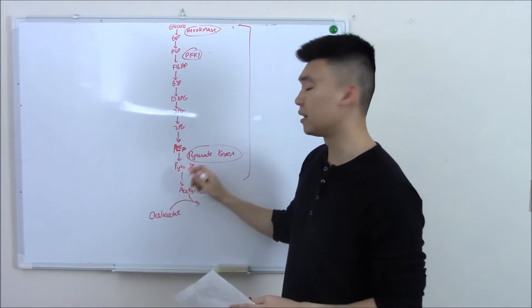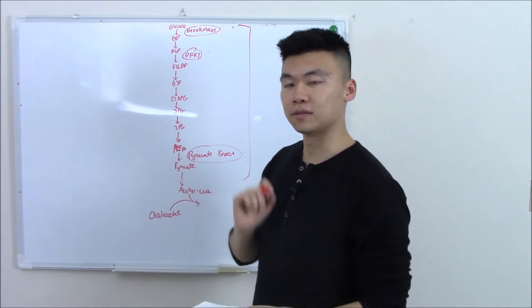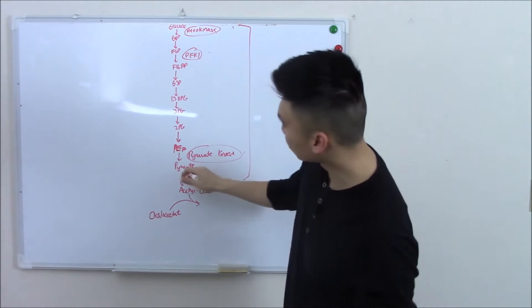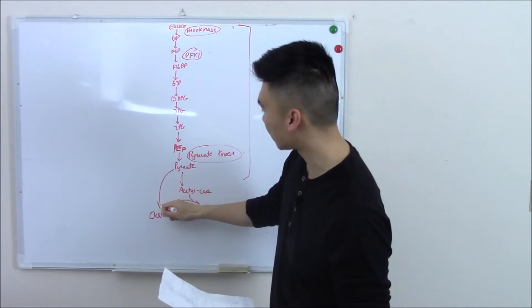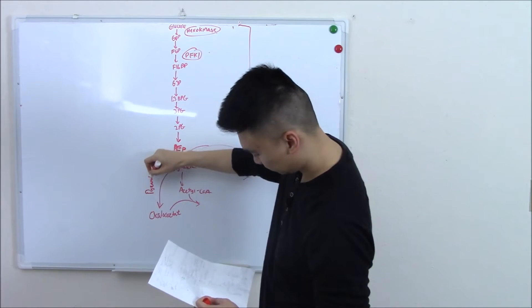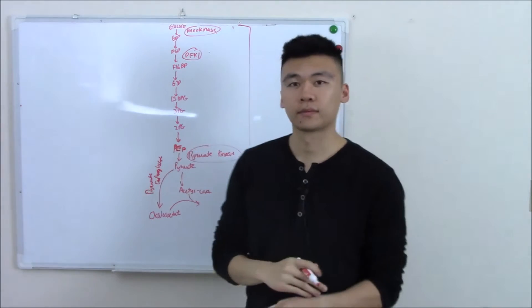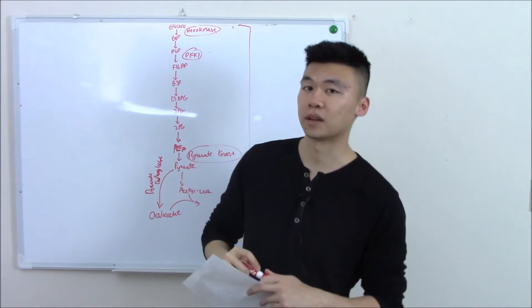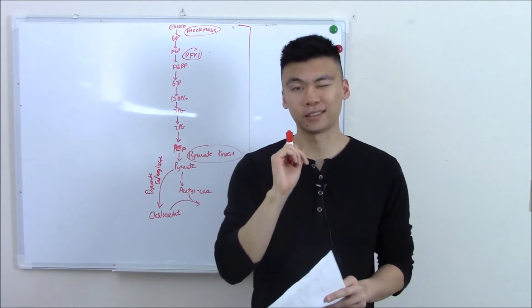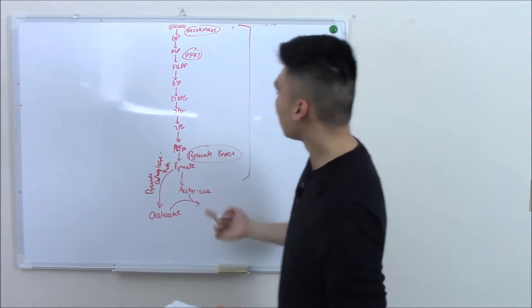Gluconeogenesis does something very clever. It starts with pyruvate and jumps down to oxaloacetate via pyruvate carboxylase. Now what do carboxylases do? Hopefully you remember that from our terminology - they move carboxyl groups around, but they need a friend. Do you remember that friend? It needs biotin.